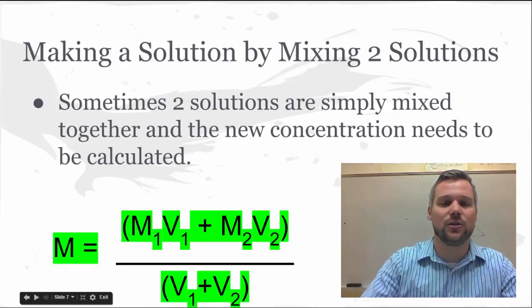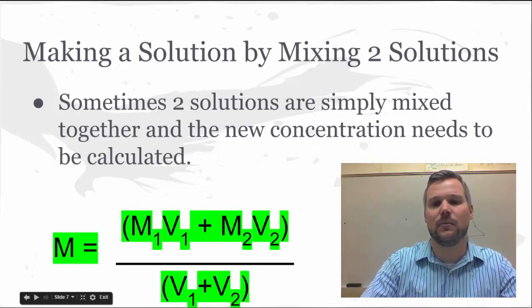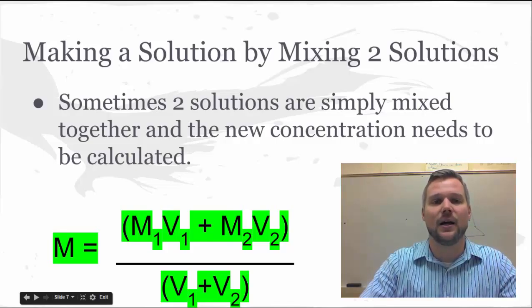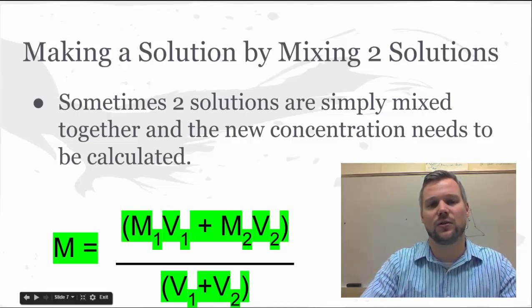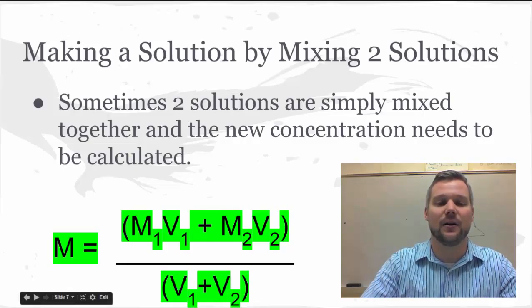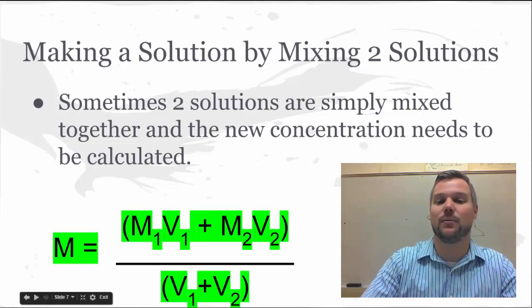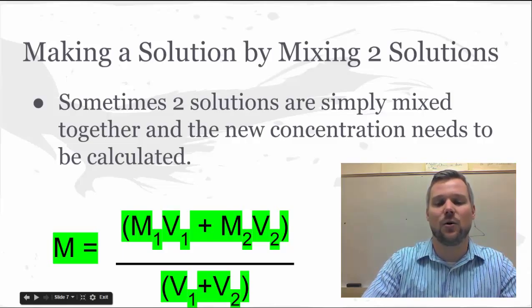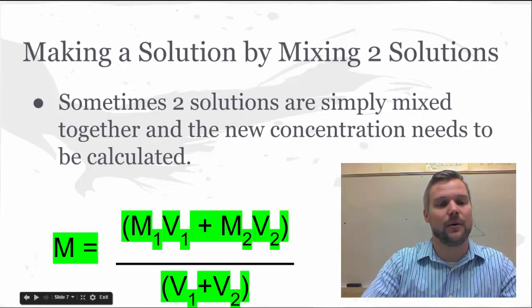The last version of making solutions is when you have two solutions and you're going to mix them together — for example, two partially filled bottles you want to combine, but you need to know the final concentration. You take the molarity times volume of the first solution, add that to the molarity times volume of the second solution, then divide by both volumes added together. Molarity times volume gives you moles, so you're taking total moles divided by total volume, which is the definition of molarity.